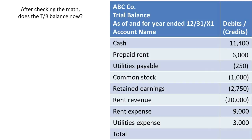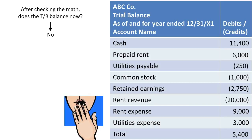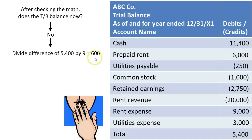Here's another example where I've modified some numbers to create an error. Adding these up, we get an out-of-balance position of $5,400 — meaning we have $5,400 more in debits than credits, so it doesn't currently balance. We can divide the difference of $5,400 by 9, and we get 600.